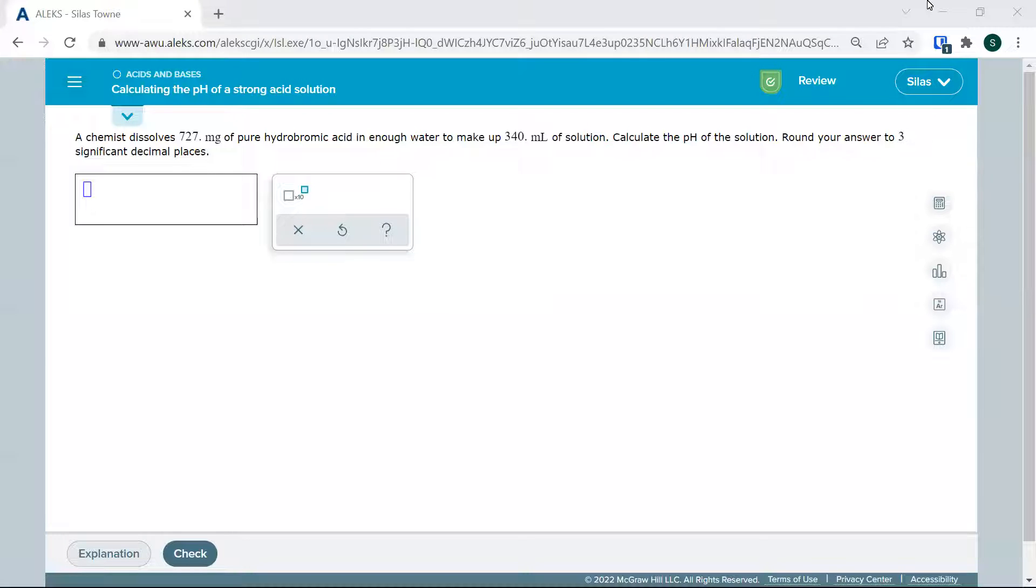All right, let's look at how to calculate the pH of a strong acid solution. The big thing with strong acids is they completely ionize so that every hydrogen on that acid becomes H3O+. So let's draw what that looks like.